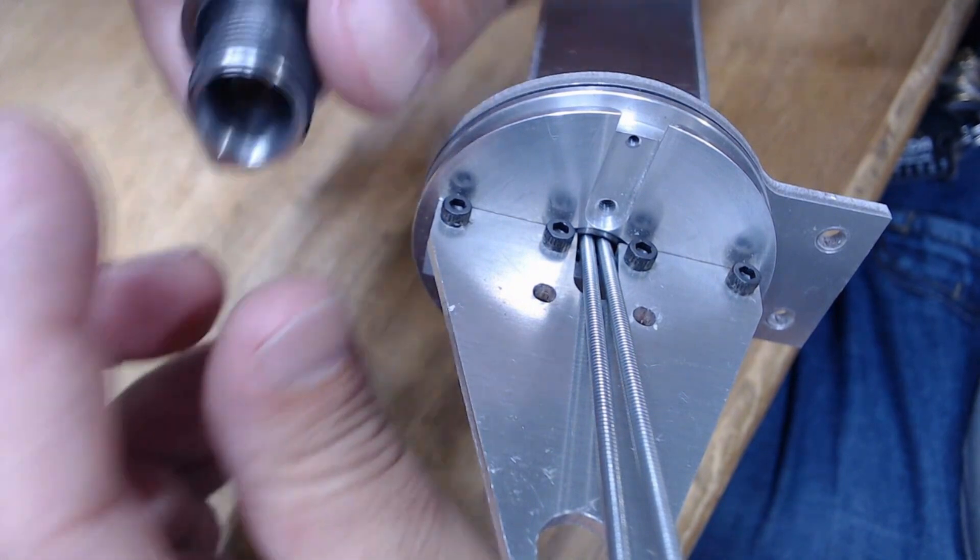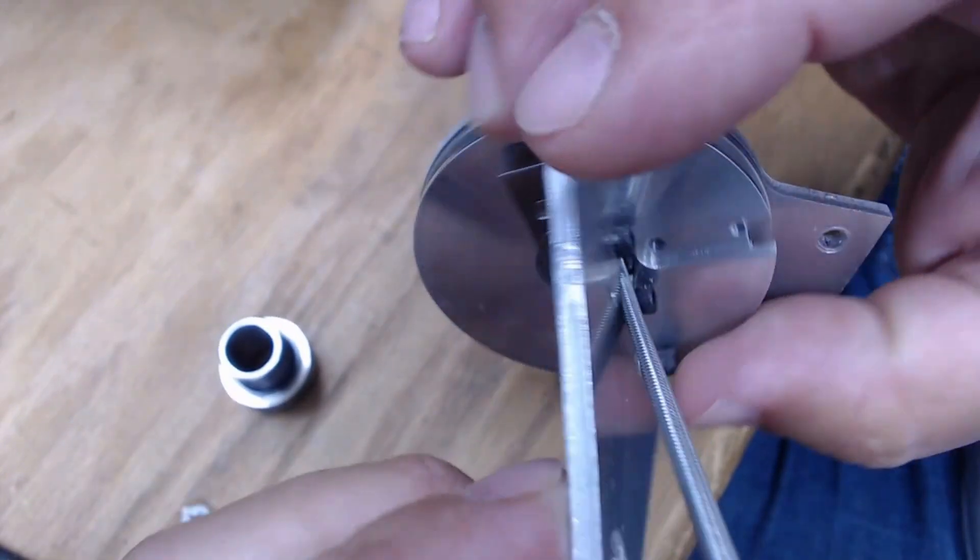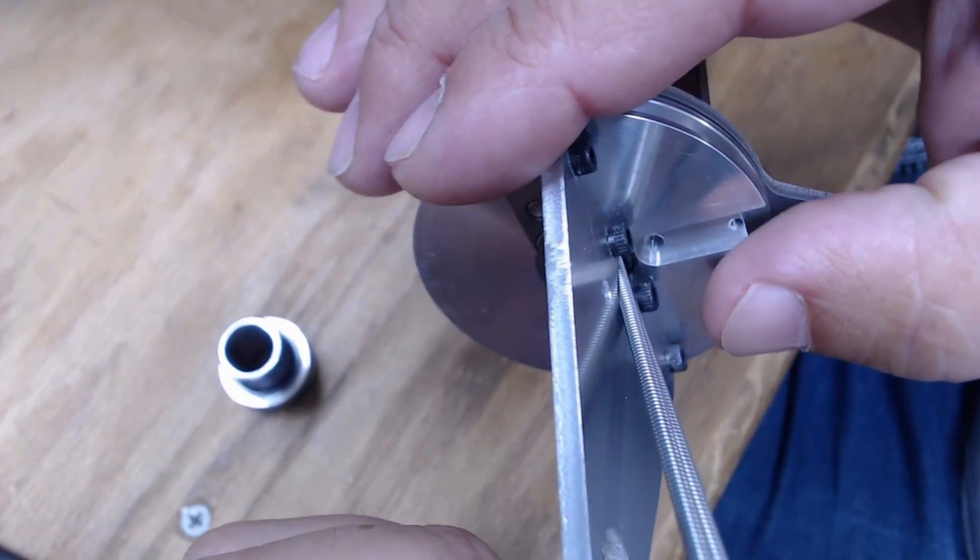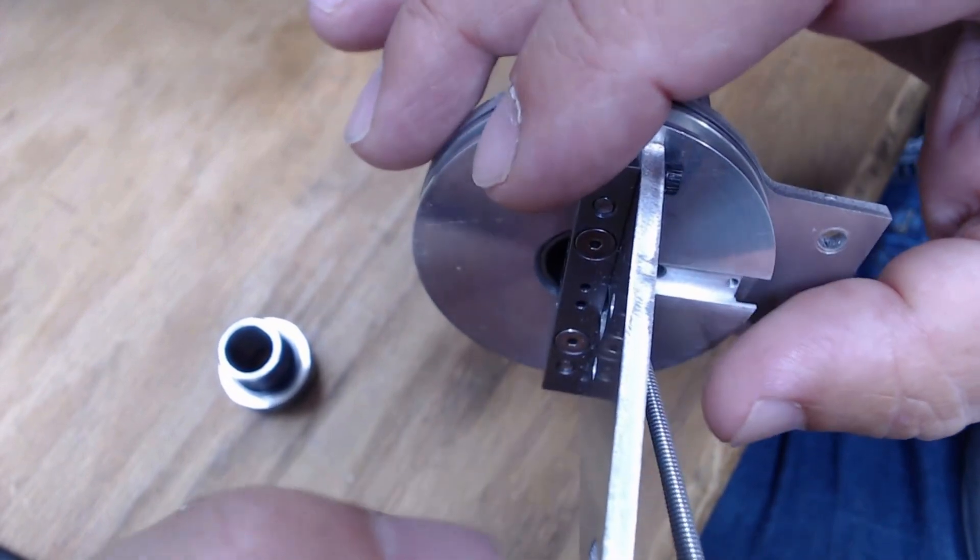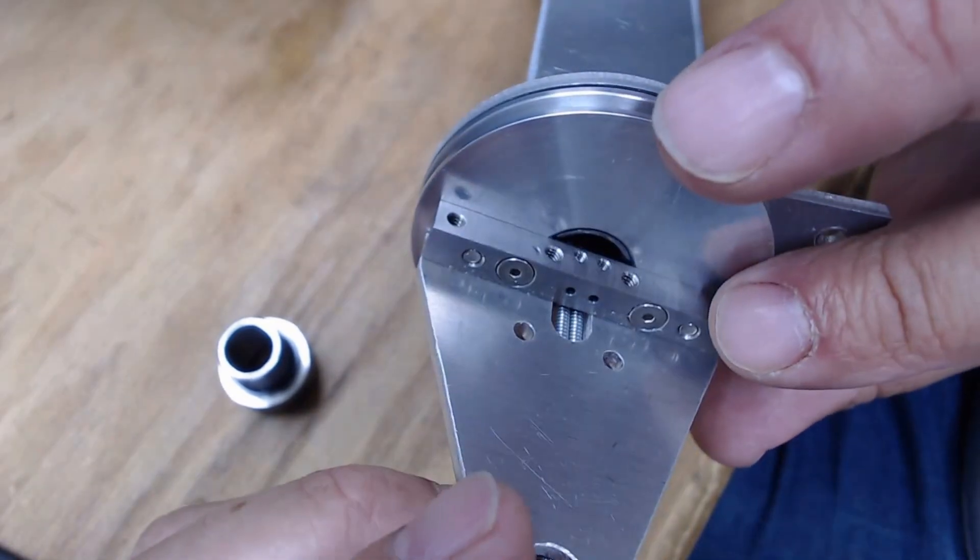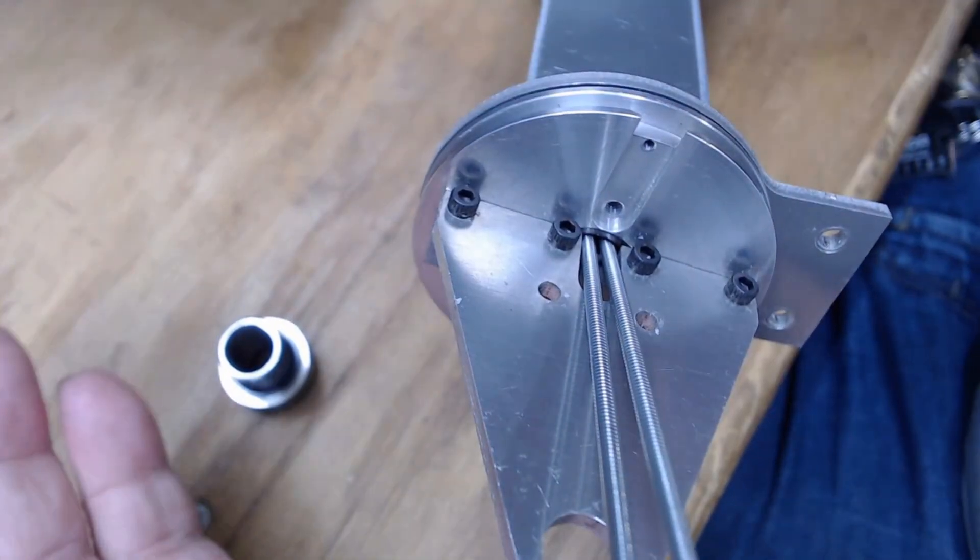But there again, just throw that chamfer in there. These things already have to flare out this way anyhow to clear everything. So that angle is not a problem at all. It doesn't interfere with anything inside, and Bob's your uncle.